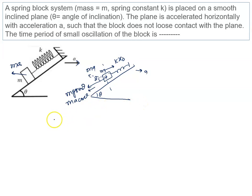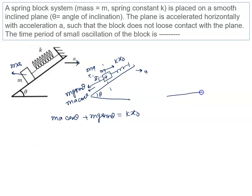In this equilibrium situation, the upward spring force is k x naught. So the net downward force — ma cos theta plus mg sin theta — must be balanced by k x naught. Now we further displace this block by a distance x, and then oscillation will start.